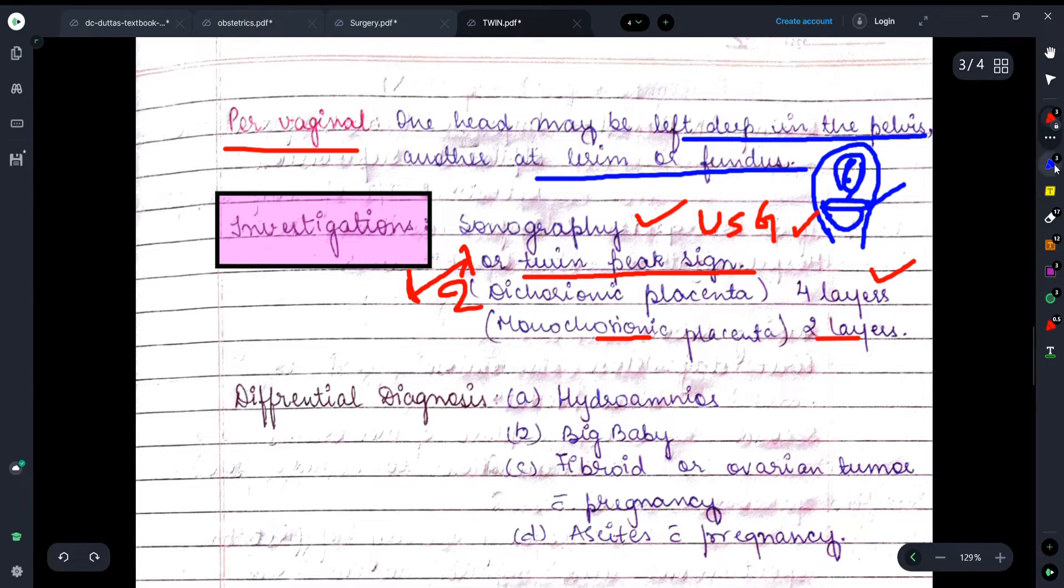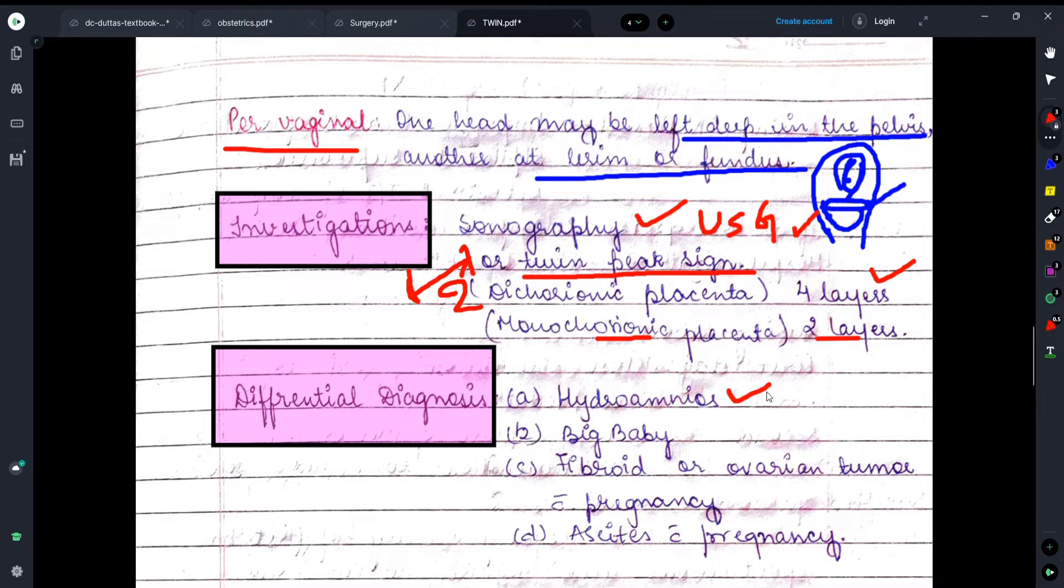Now, talking about the differential diagnosis - with what can we confuse twin pregnancy during examination? Here is hydroamnios. Sometimes it happens that because of too much amniotic fluid, this happens and we confuse it with twin pregnancy. Sometimes a big baby can also cause this - the baby is very healthy and that's why it feels like this. Sometimes fibroid or ovarian tumor occurs with pregnancy. The fibroid will also have some mass, some size. Along with that there's also the fetus size, that is why this can be differentiated or can be thought of as twin pregnancy.